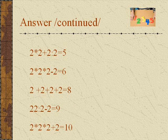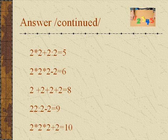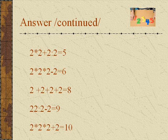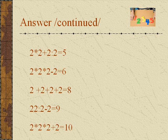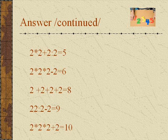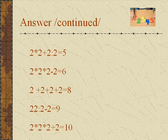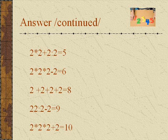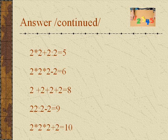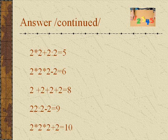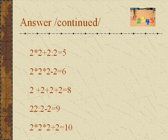And so on. 2 times 2 plus 2 divided by 2 equals 5. 2 times 2 times 2 minus 2 equals 6. 2 plus 2 plus 2 plus 2 equals 8. 22 divided by 2 minus 2 equals 9. 2 times 2 times 2 plus 2 equals 10.